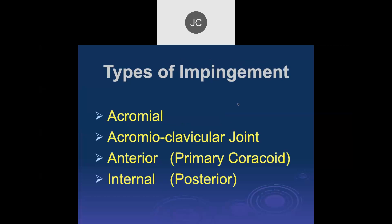There are a number of impingement syndromes described around the shoulder. Acromial and acromioclavicular joint impingement were described years ago predominantly by Charles Neer in New York. There's also anterior or primary coracoid impingement, and internal impingement that we'll discuss in overhead throwing athletes.